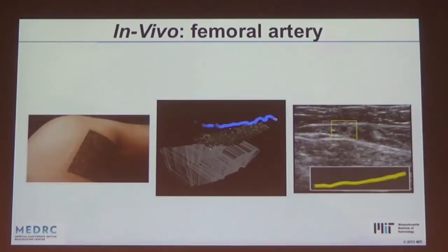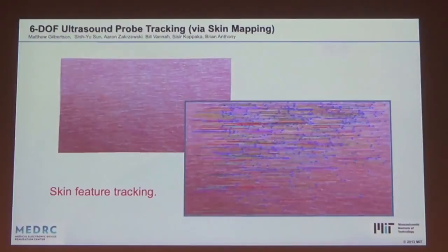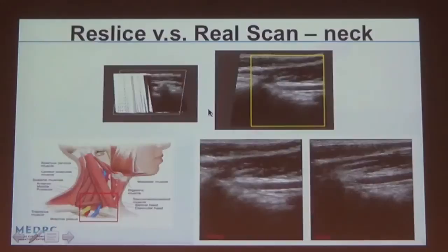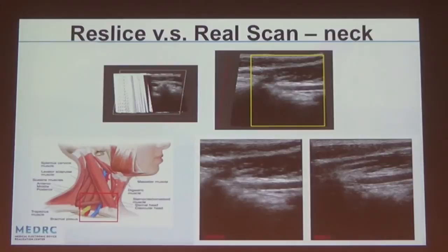Getting away from tattoos and using natural skin features, these images show frame-to-frame tracking. To make this clinically relevant: orienting the probe on the neck and doing a scan, then doing a resplice of that scan across the neck and comparing it to a direct imaging scan — that's a resplice out of the volume versus a direct scan. The clinical study we're ramping up at MGH has sonographers ranking the performance of this type of comparison on the neck, abdomen, leg, and so on.